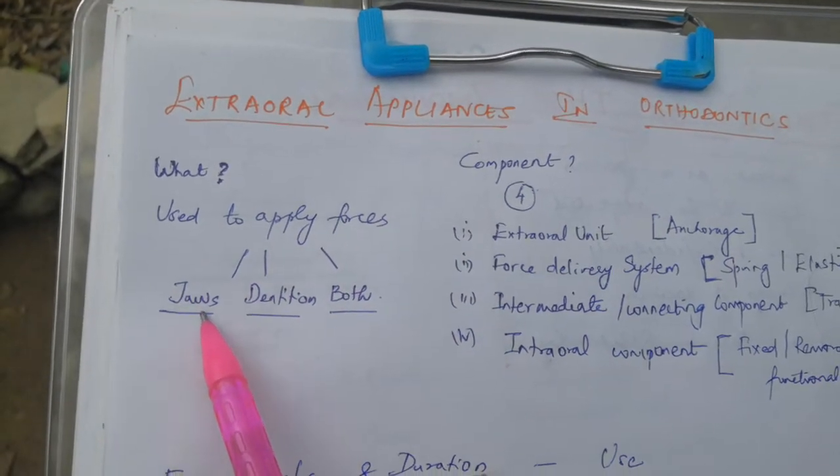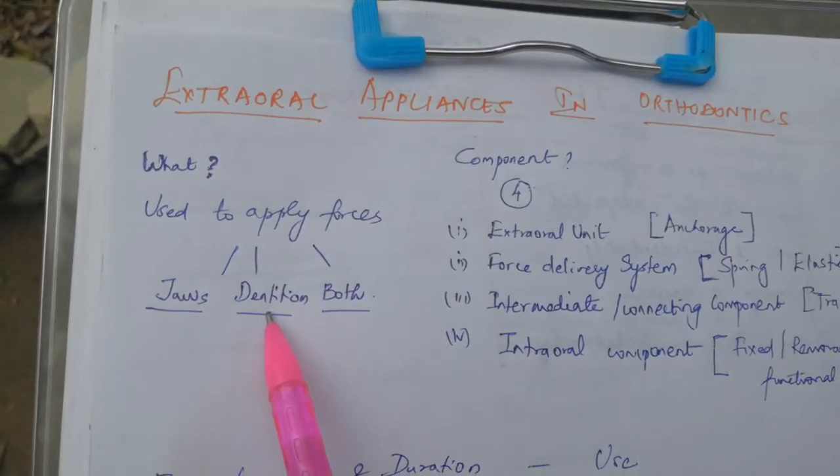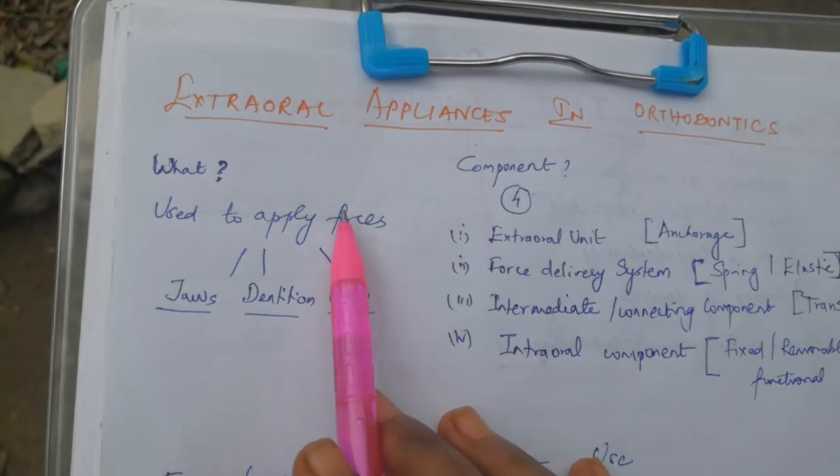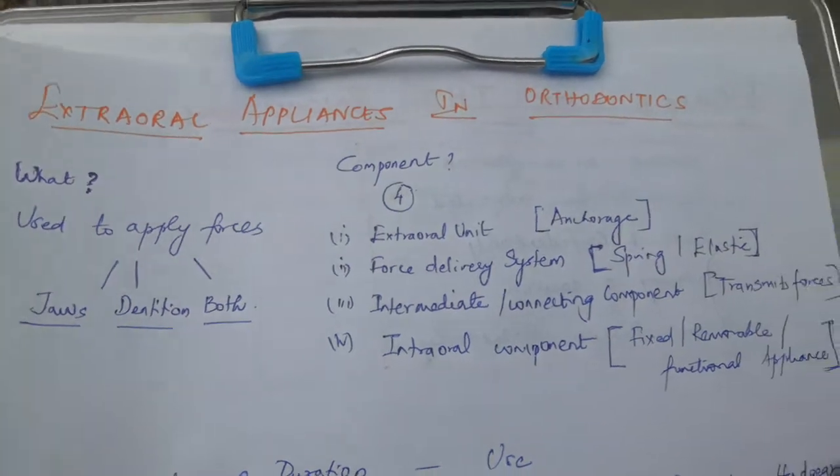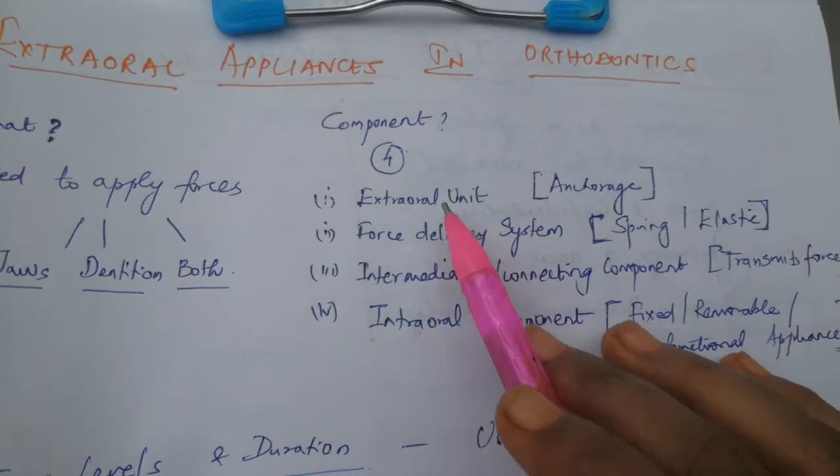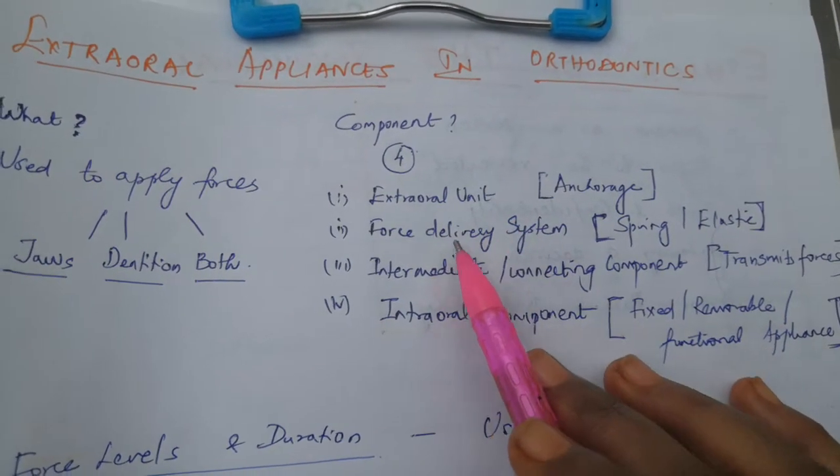The force may be exerted on the jaw and dentition. In any extraoral appliance there will be four components: extraoral unit, force delivery system, connecting component, and intraoral component.